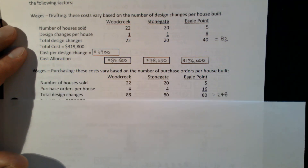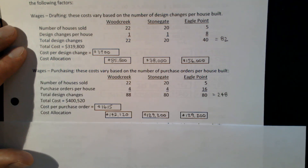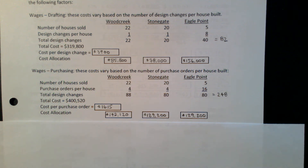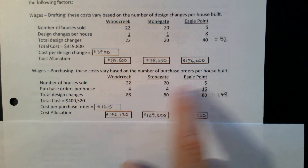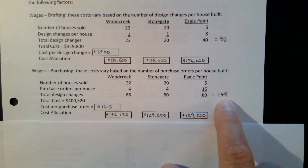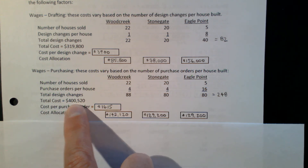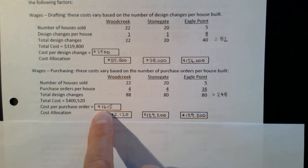The next one I'll look at are purchasing costs, which are based on purchase orders per house. In some cases we build a standard vanilla house and issue just a couple of purchase orders to our suppliers. In some cases, like Eagle Point, there's a lot of customization so we have to issue many different purchase orders. I multiply the number of houses built times the purchase orders per house to get the total purchase orders issued for the year, then divide that by the total cost of the purchasing department and get $16.15 per purchase order.